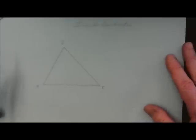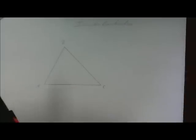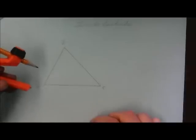All right. In this construction, we're going to construct the in-center of triangle ABC. And the in-center is going to be the intersection of the angle bisectors.